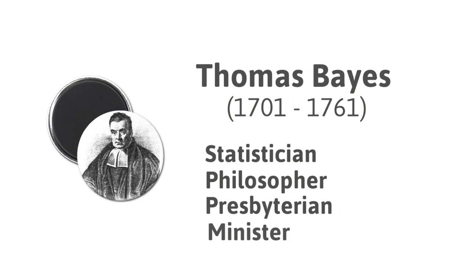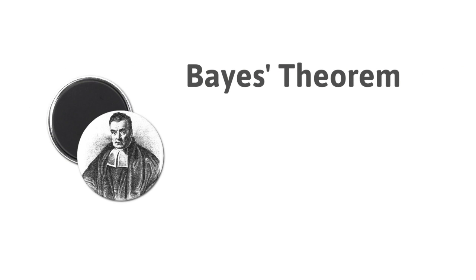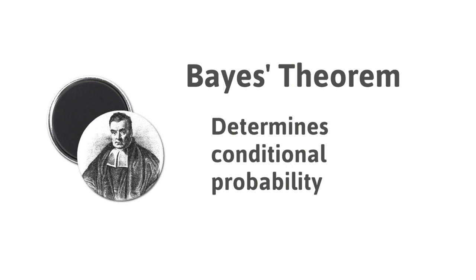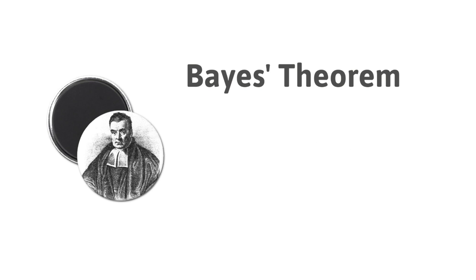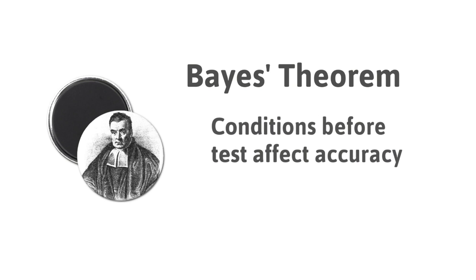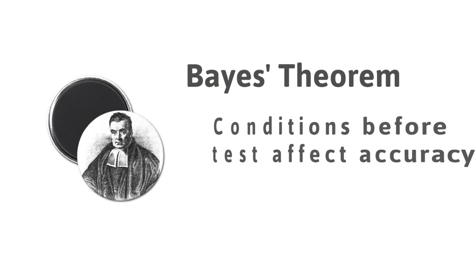The idea behind Bayes' Theorem is that the probability of something — maleness or femaleness in this case — is affected by certain characteristics or conditions, which is why it's called conditional probability. As we will explain, Bayes' Theorem comes into play every time we perform a diagnostic maneuver or interpret a laboratory test. Simply stated, it tells us the conditions before a test is performed affect the accuracy of the test.